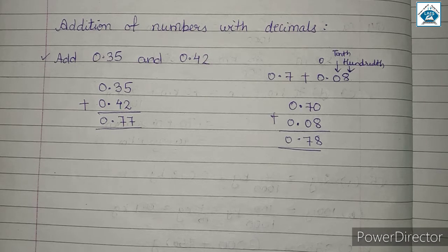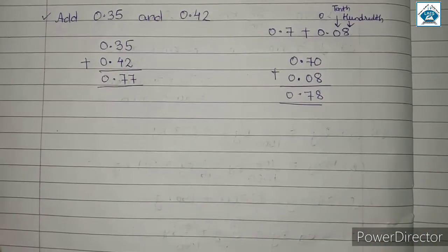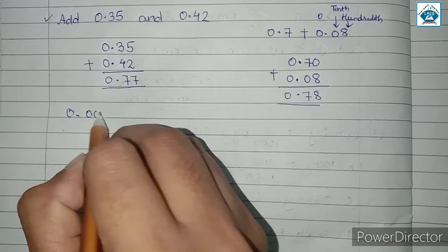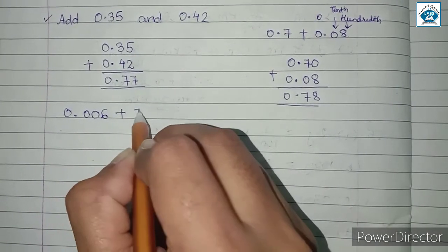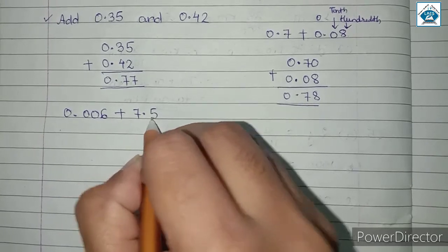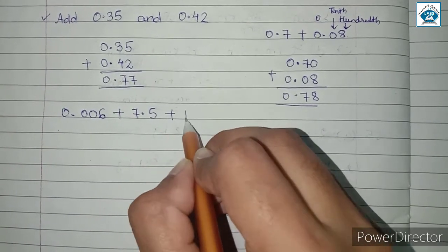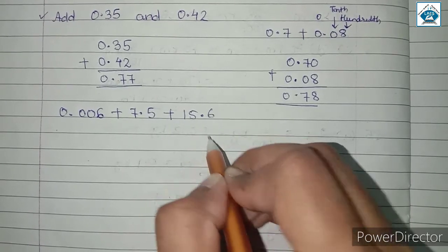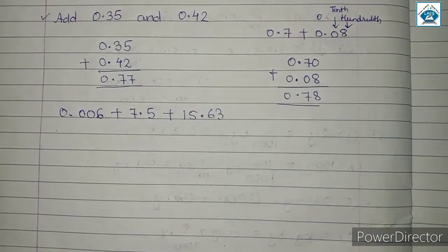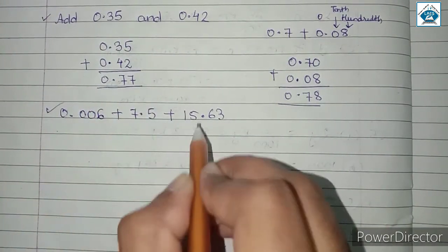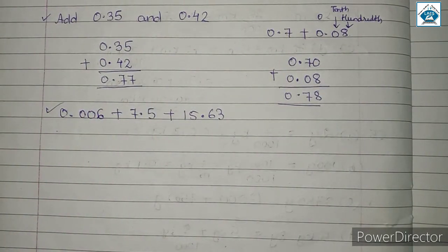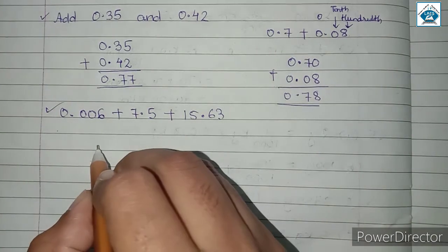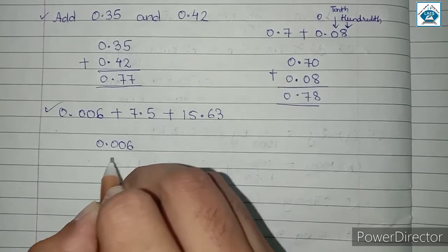Whenever we do addition of two decimals, one thing we always have to keep in mind is: point should come under point. Let us consider another example. We need to add 0.006, 7.5, and 15.63. This is our sum — we need to find the sum of these 3 decimals. So we will do vertical addition. This is 0.006.